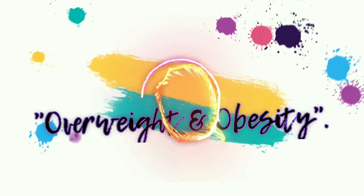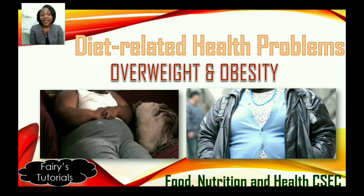Those upcoming episodes will include the different types of nutrition-related disorders — what they are, the symptoms, treatment, and so much more. In today's video, we'll be starting with overweight and obesity. We're still on module 1, which is diet and health, and we're now at content 3, where we'll be exploring the different types of diet-related health problems — specifically overweight and obesity: what it is, causes, and prevention.